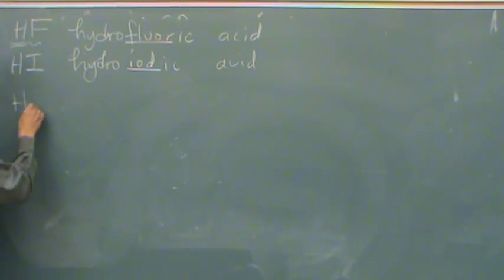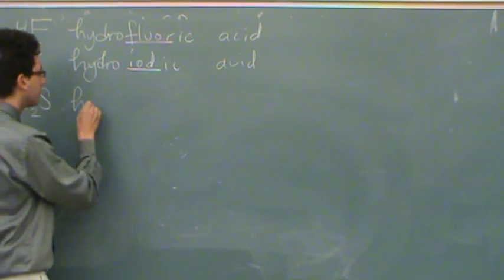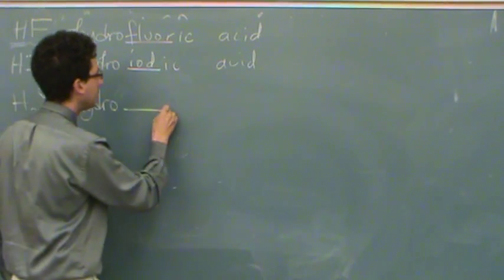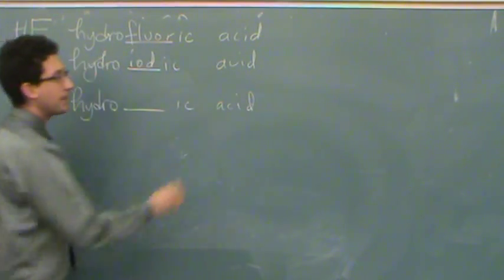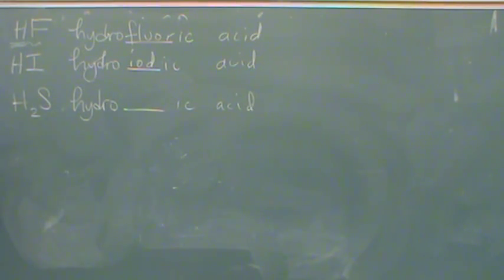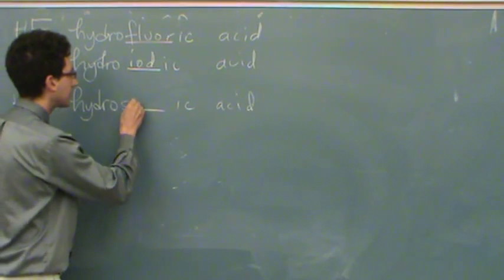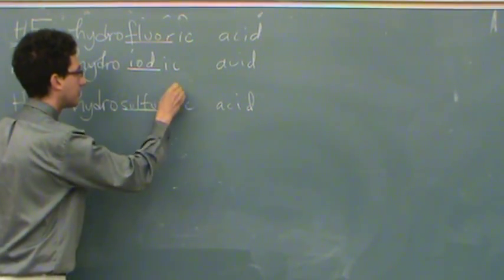Let's try H2S. Again, you're seeing H in front, so you're thinking the same thing — two different types of atoms. So again, hydro, stem name, -ic, acid. Same pattern. Is that sulfur as a negative 2? That's right. In an acid, hydrogen will always be plus 1, so the sulfur has to be 2- or minus 2. So this is hydrosulfuric acid.